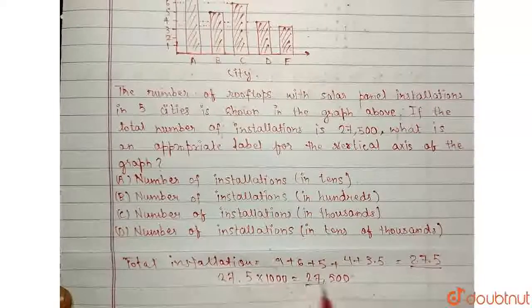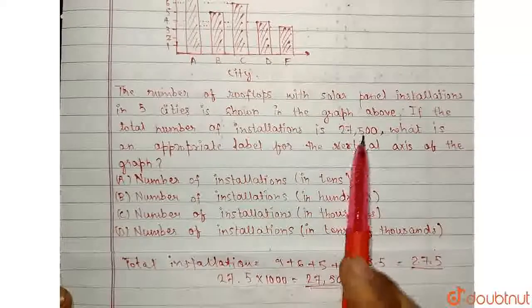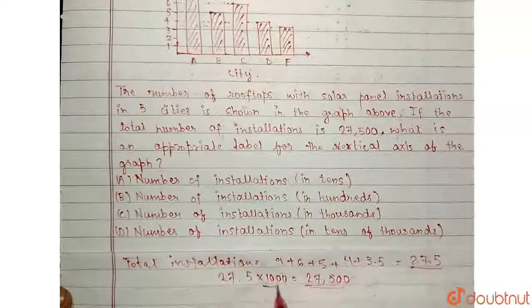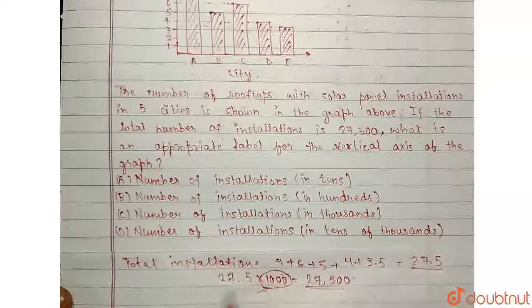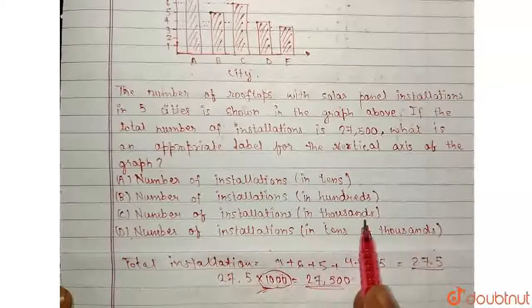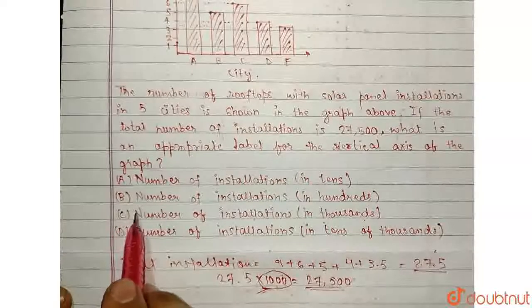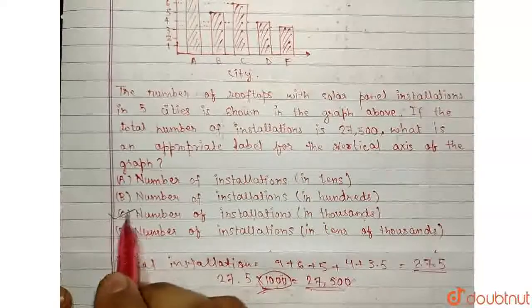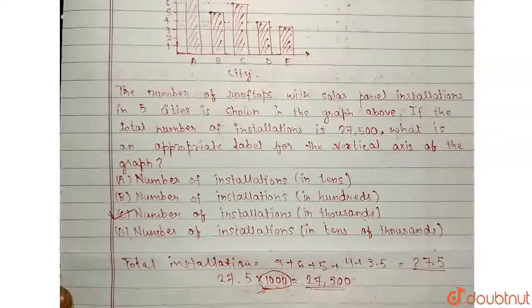Okay, we had to equate these two to know the multiplication factor. So it is in thousands, so the number of installations is in thousands. That is the label of the vertical axis, so the answer is C in the question. Thank you.